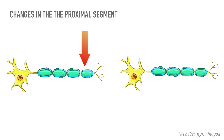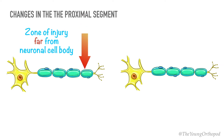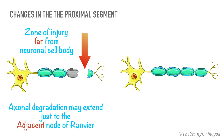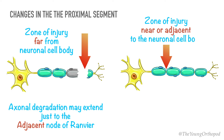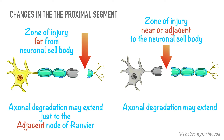If the zone of injury is far from the neuronal cell body, the Schwann cells degrade and the axonal degradation may extend just to the adjacent node of Ranvier. However, if the zone of injury is near or adjacent to the neuronal cell body, then the neuronal degeneration may extend all the way to the cell body to cause neuronal cell death.